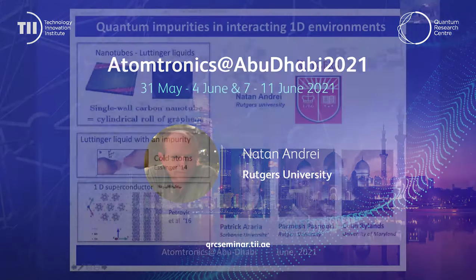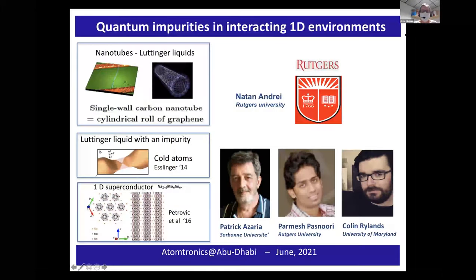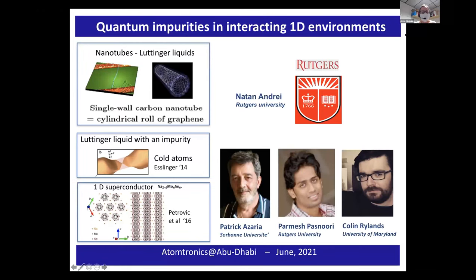It's a pleasure, a great pleasure to have you here. Nathan is a major expert in condensed matter and also in particle physics. He has a specific expertise on low dimensional systems, and he's one of the masters of special techniques that we can use in one dimension like bosonization. He's probably known everywhere for his solution of the Kondo model, but he has provided many more important results. It's a great pleasure to have you here at our Atomtronics conference once again.